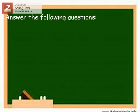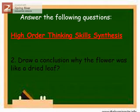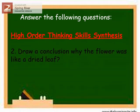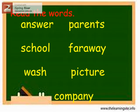Under High Order Thinking Skills Synthesis: Draw a conclusion why the flower was like a dried leaf. Answer: A flower would not stay alive long enough to reach Juno by mail.